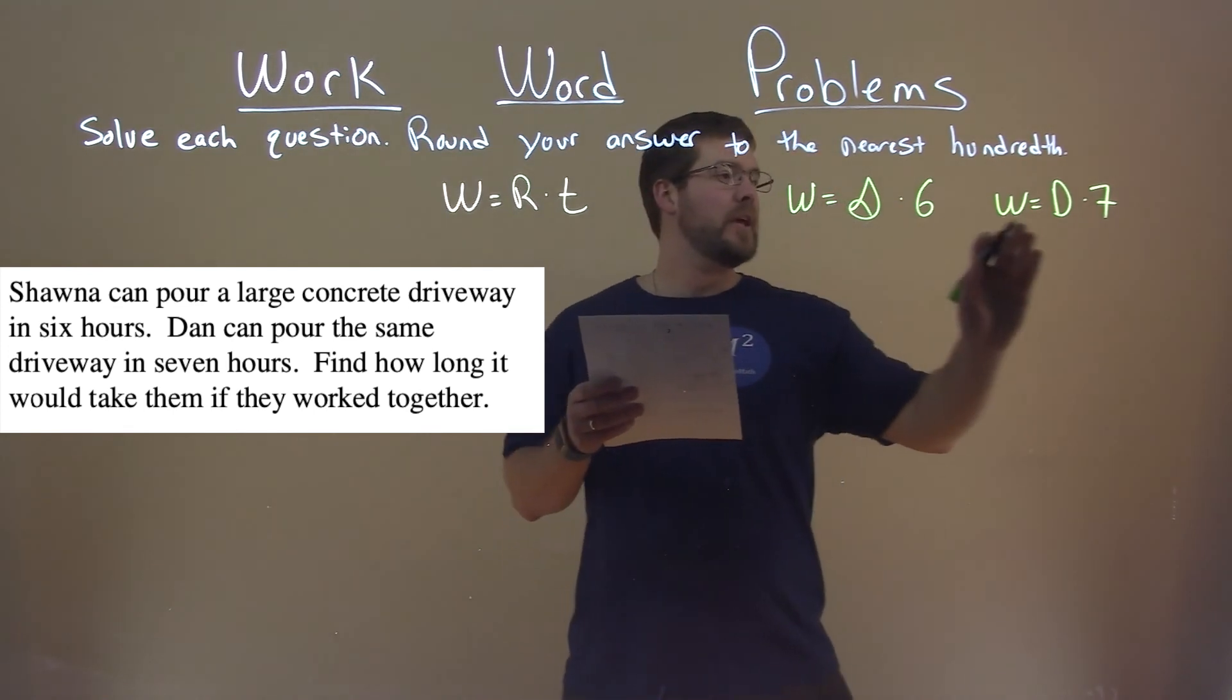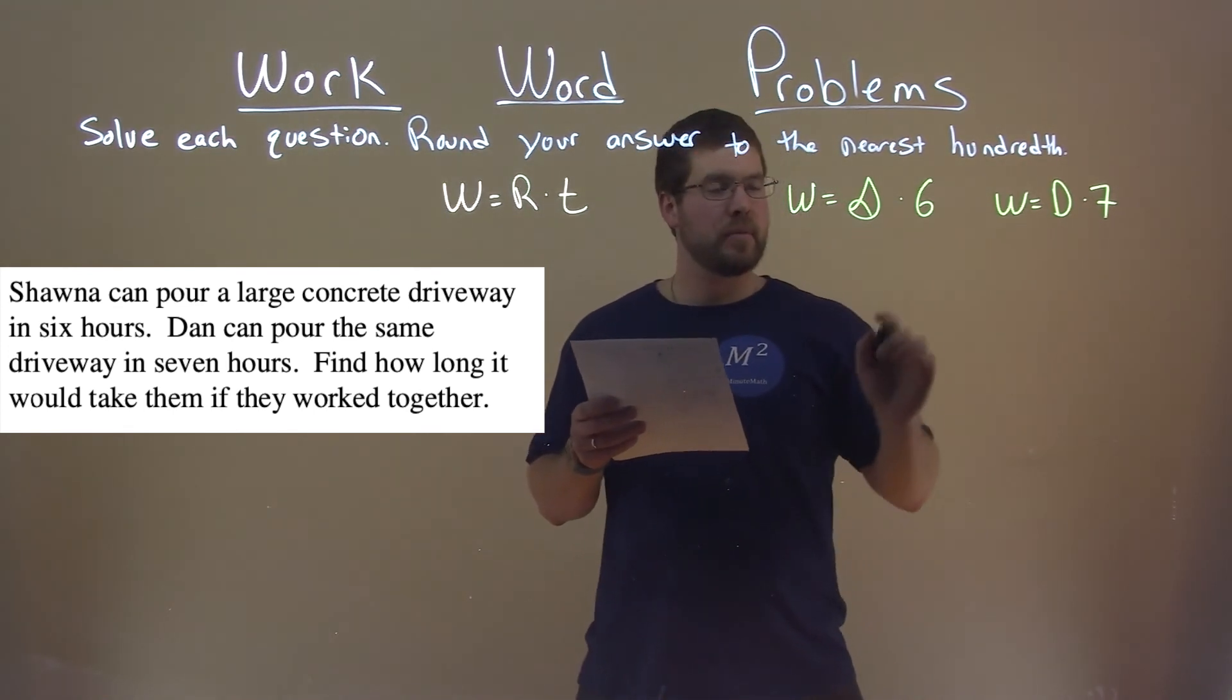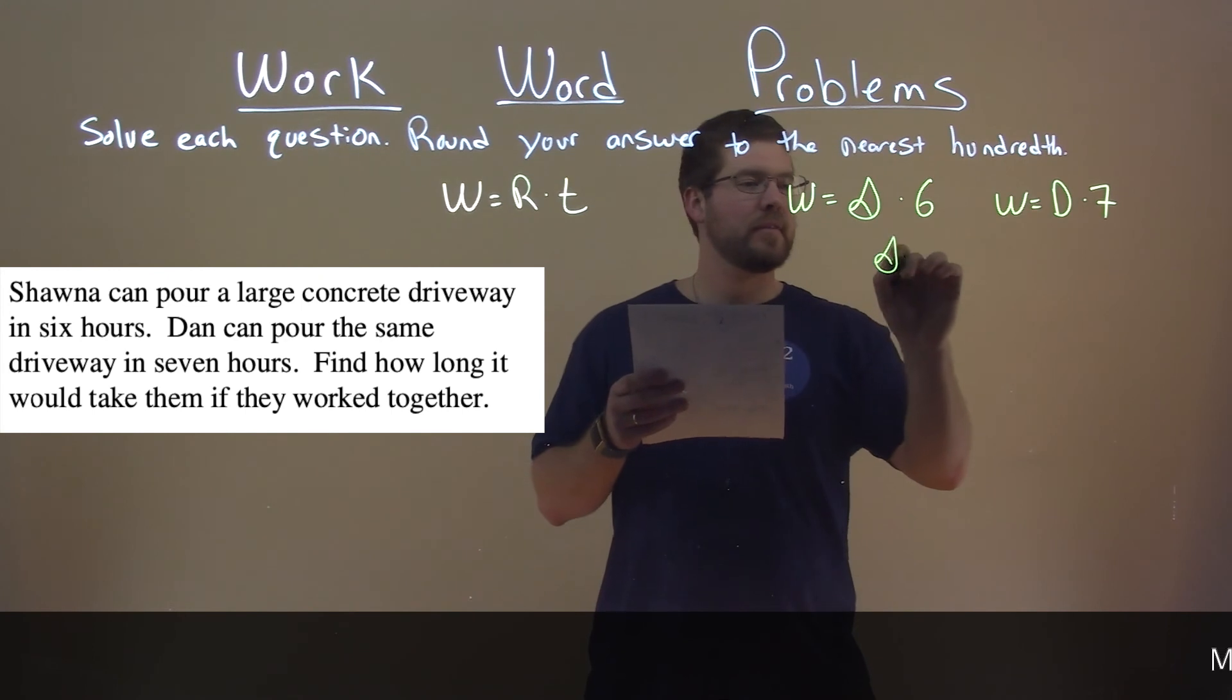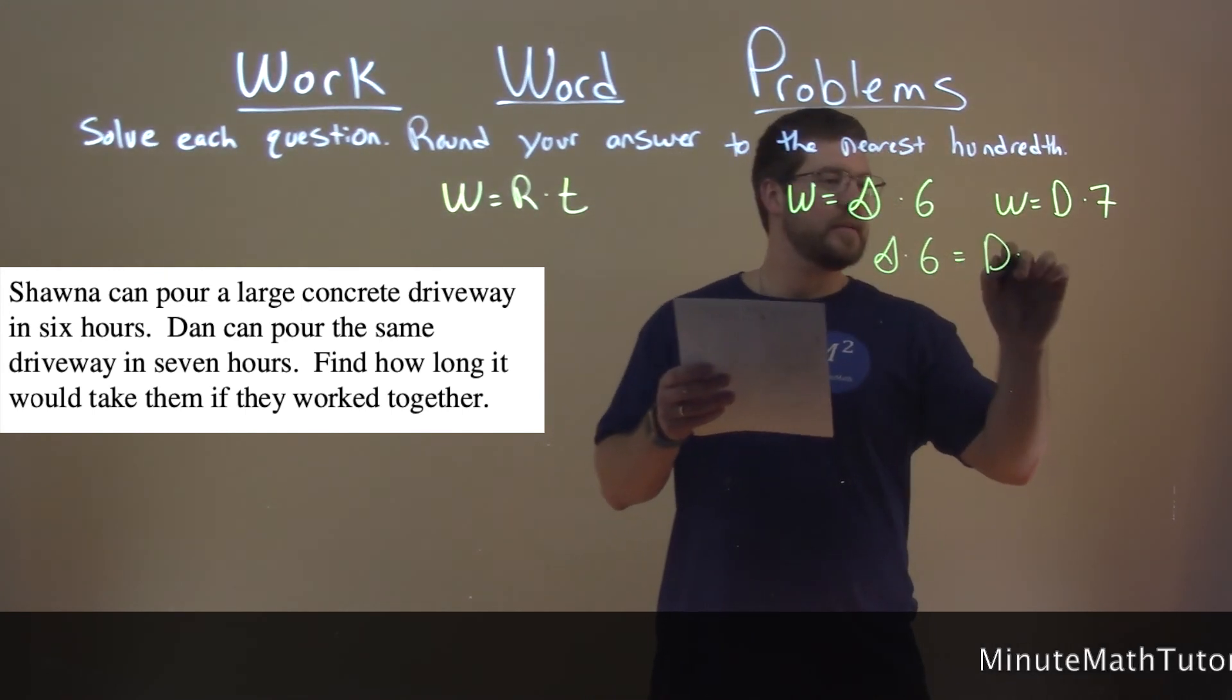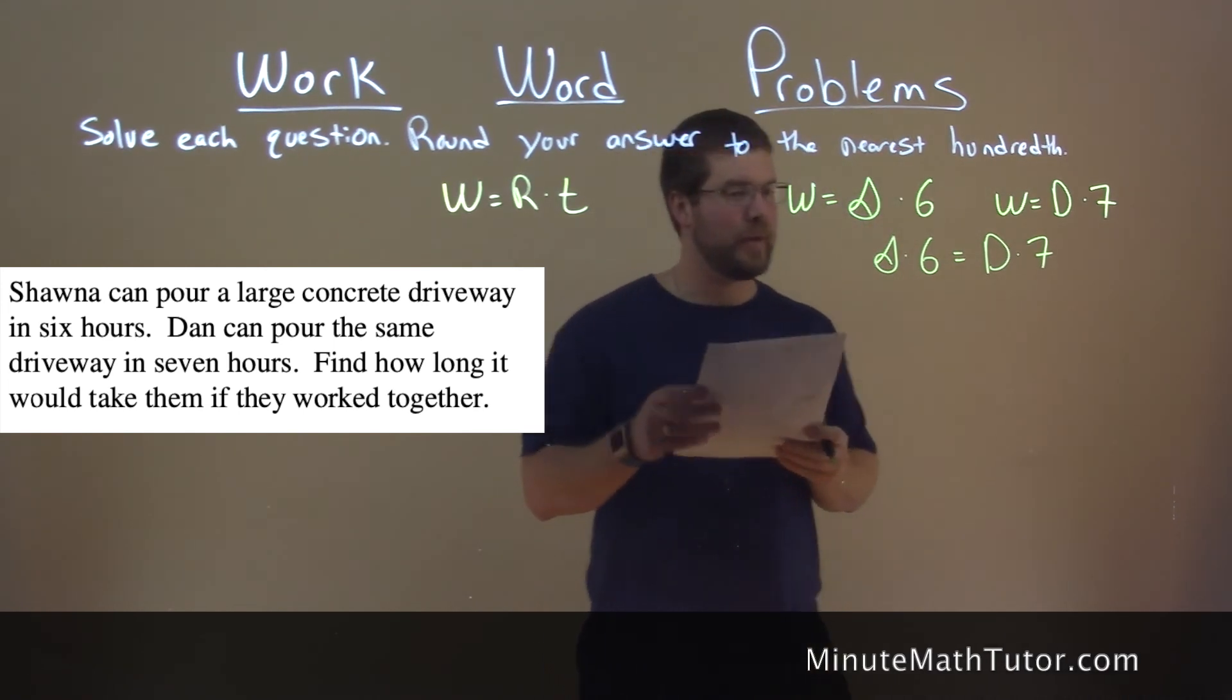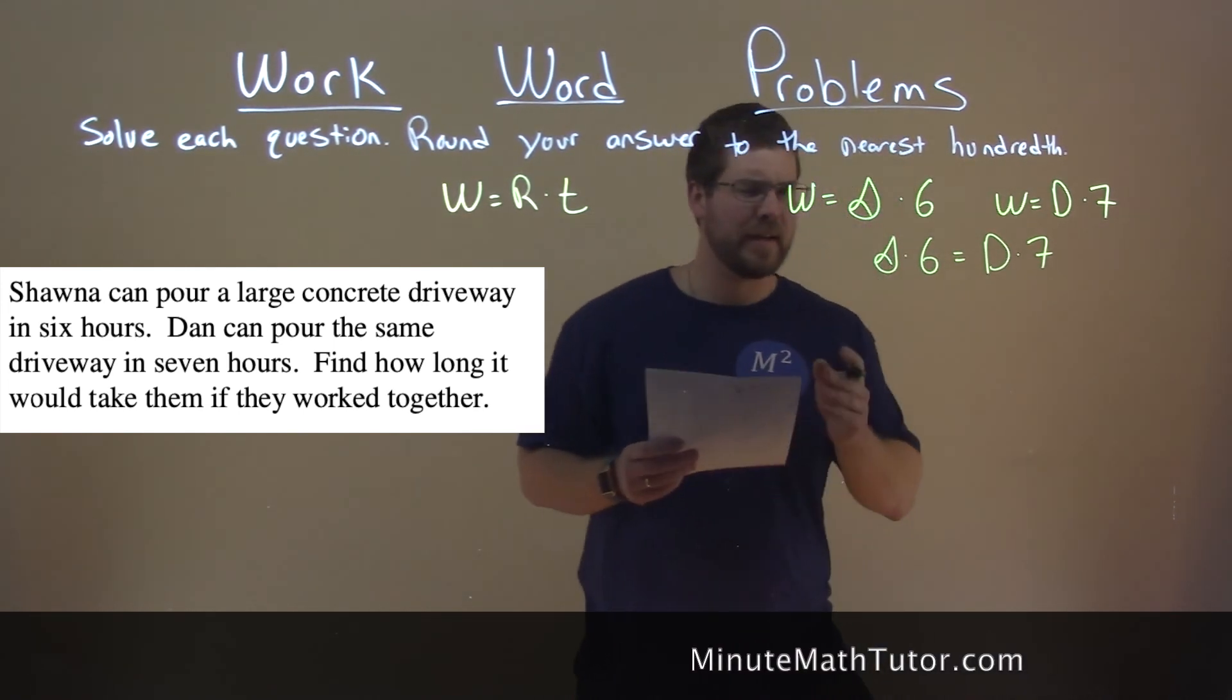So, we can set them equal to each other because they're both equal to W. So, we have S times six, and I know my S's are weird, D times seven or bad. Let me know down below if you think they're bad, but still like this video.